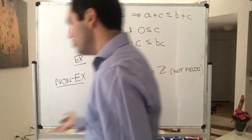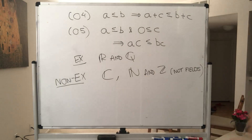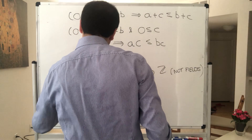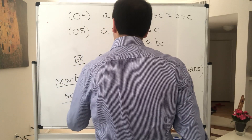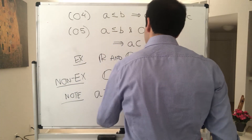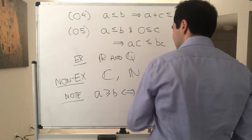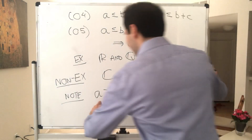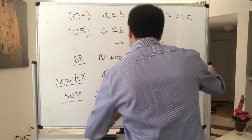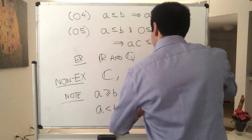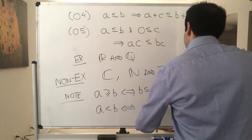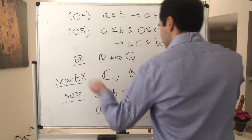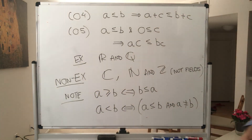We define less than or equal. How do you define greater or equal? We define A ≥ B if and only if B ≤ A. And there's also strictly less than: A < B means A ≤ B and A is not equal to B. Similarly for strictly greater than.